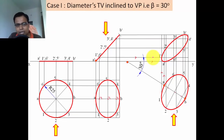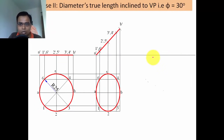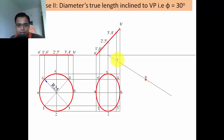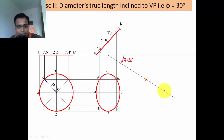Now let's look at case two: diameter's true length inclined to VP. Steps one and two for both cases are the same — no difference. The only difference is the terminology: the angle is still 30 degrees, but here the true length of the diameter makes that angle. So phi equals 30 degrees, compared to case one where beta equaled 30 degrees. The true length of the diameter is 50 millimeters.